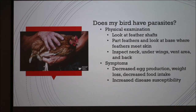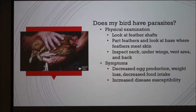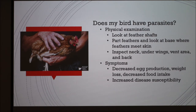So how can you tell if your bird has parasites? You can do a physical examination — pick up your bird, and we'll just talk about chickens for instance. You'll look at the feather shafts, part the feathers, and you can see the parasites move around. You also want to look at the base of the feathers where the feather meets the skin. Some common places to look are the neck feathers, underneath the wings, the vent area, and the back.